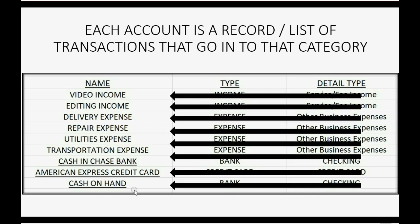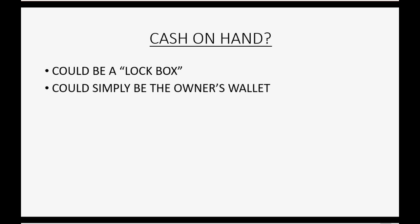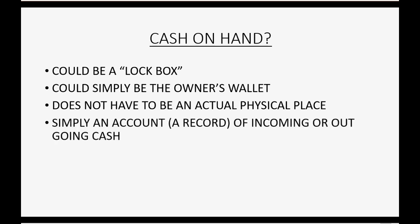You may ask about the last account, cash on hand. Cash on hand could physically be a lockbox where you put cash from the bank so that you can pay cash-related expenses, or it could simply be the owner's wallet. It does not have to be an actual physical place — it's simply an account or record of incoming or outgoing cash if we use that method of payment to receive money from customers or pay money to vendors.